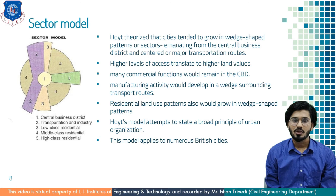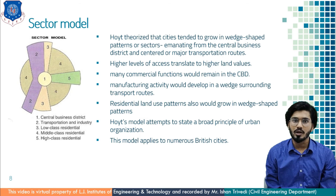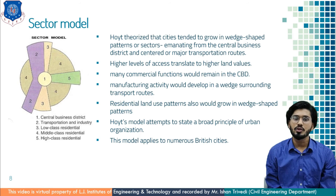Residential land use patterns also grow in wedge-shaped patterns, with a sector of low income households bordering the manufacturing sector. The sector of middle and higher income group households is located away from the industrial areas — as you may have observed in your own city, higher income groups are always located away from industrial areas. The Hoyt Model attempts to state a broader principle of urban organization, and this model applies to numerous British cities.